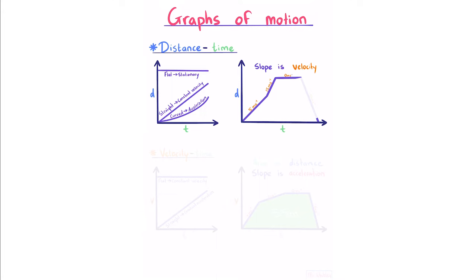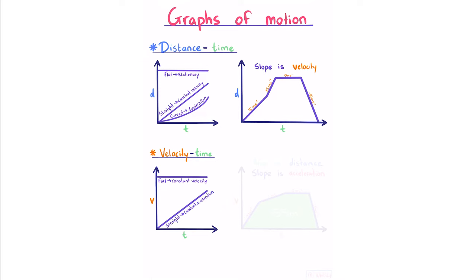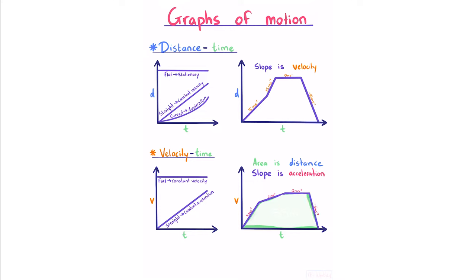If our slope is zero then our velocity is also zero, and if we have a negative slope we have a negative velocity. On a velocity-time graph, velocity is on the y-axis and time on the x-axis. A flat line means constant velocity; a straight line means constant acceleration. The area underneath a velocity-time graph is distance and the slope is acceleration. Since the area underneath the graph is distance, we could calculate the area to find a distance of 55 meters has been traveled.